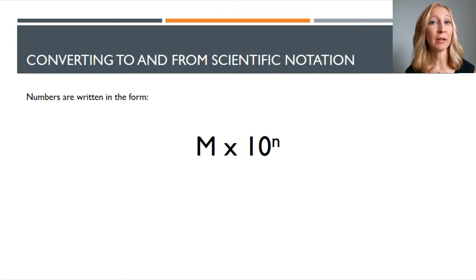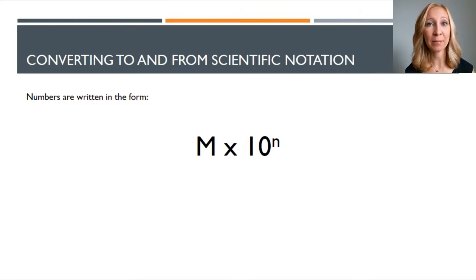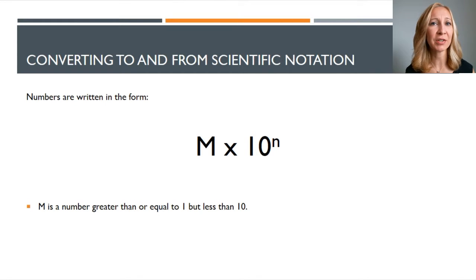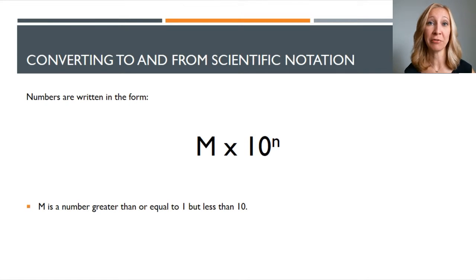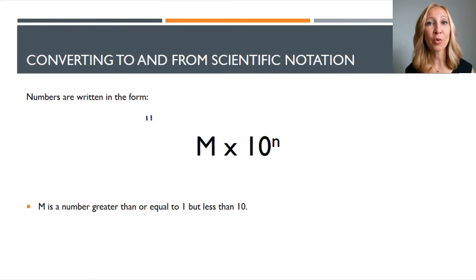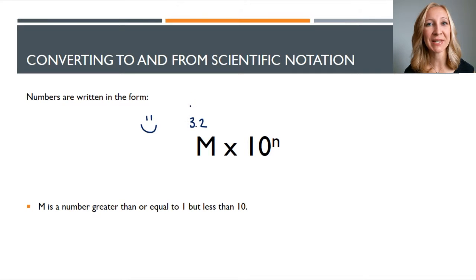So how do we use scientific notation? Numbers are written in a very specific form, represented as m times ten to the n. Those letters m and n don't necessarily represent anything special — I just use them arbitrarily. The m has to be a number greater than or equal to one but less than ten. That's the rule: you have to make sure that first number is greater than or equal to one and less than ten.